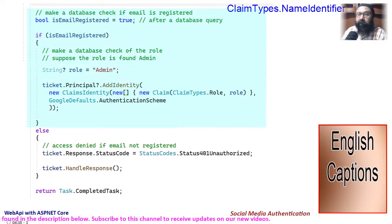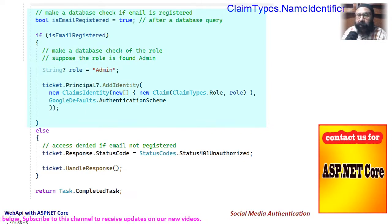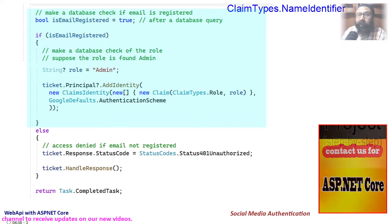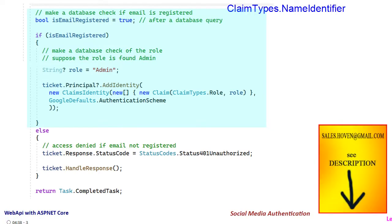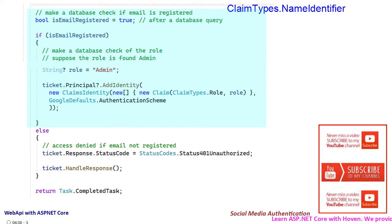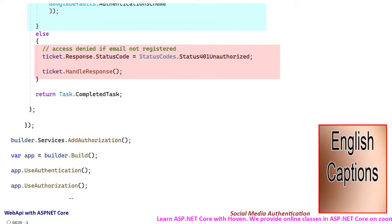Once you have the email ID, you can process it in whatever manner you like. For instance, you can determine if the email exists in the project database. Then you can assign a role to the user. We have assumed that the user is assigned the admin role. Next, add this role to the claims principal. If the user fails authentication, send a 401 unauthorized response.